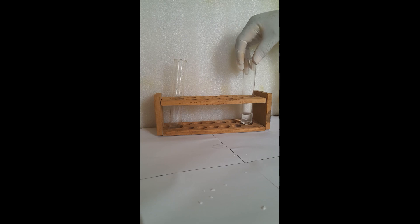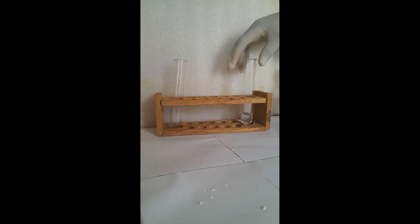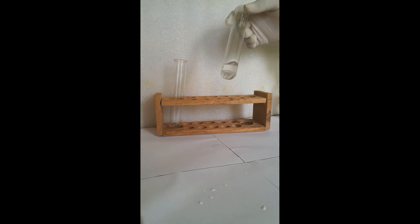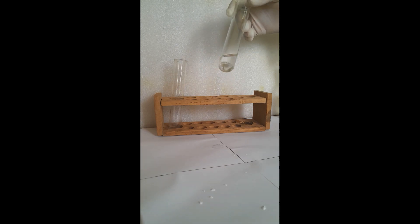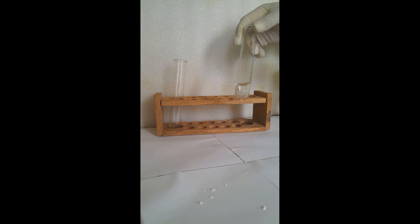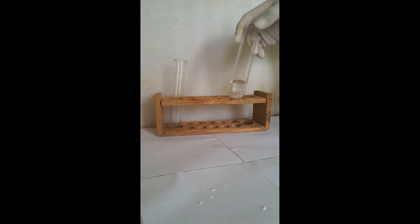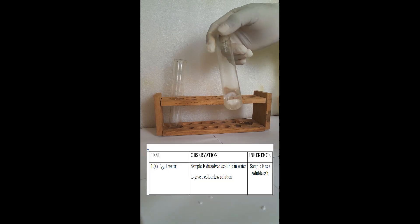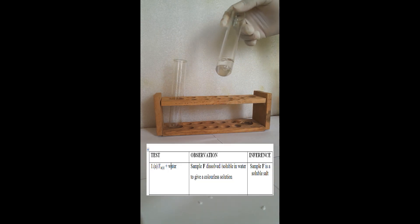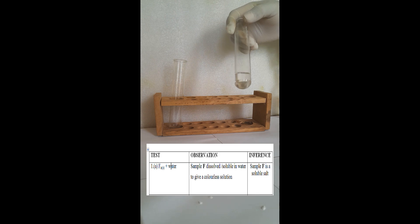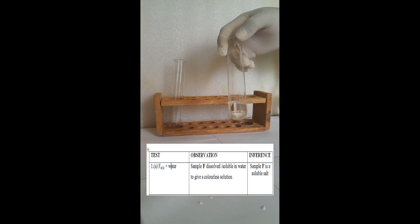Let's look at some of the tests we can handle on this. Now for your table, you are going to have test, observation, and inference. Under your table, you will say this is sample F, plus water. Your observation will be: sample F is soluble in water to give a colorless solution. The solution is colorless, so our inference is: sample F is a soluble salt.